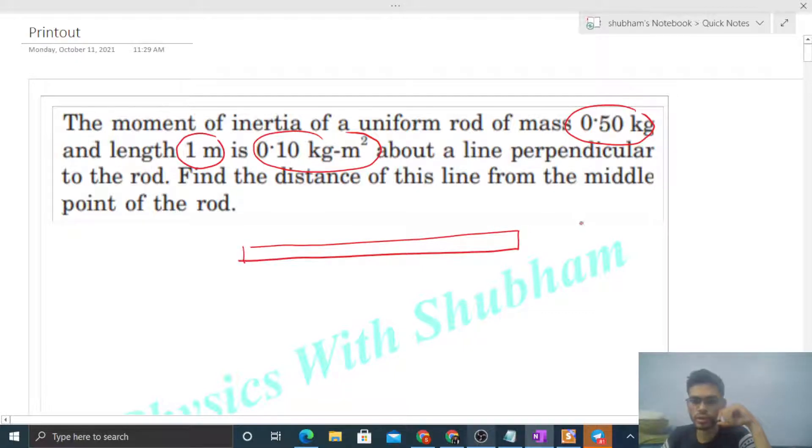So a uniform rod of mass m and length l is given, and the moment of inertia about an axis perpendicular to this rod is given. Let's say this is the axis, and the moment of inertia I of this rod about this axis.